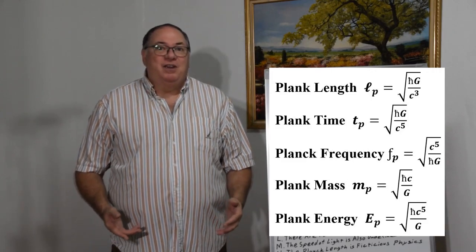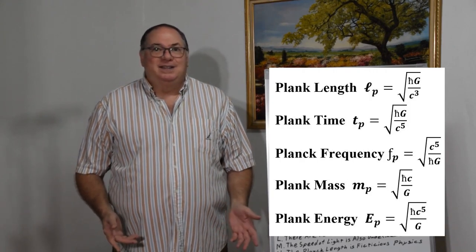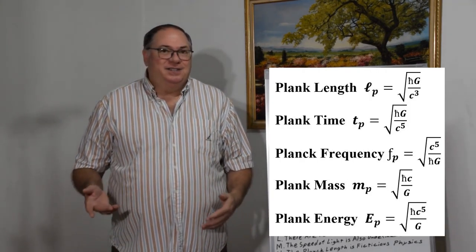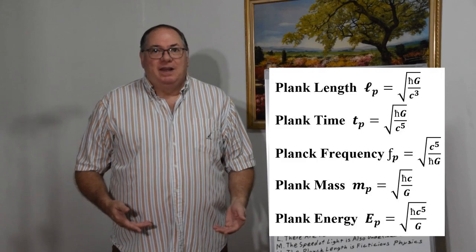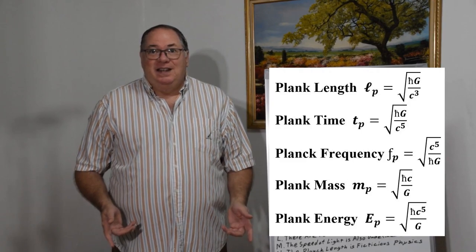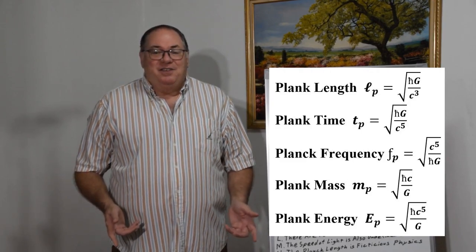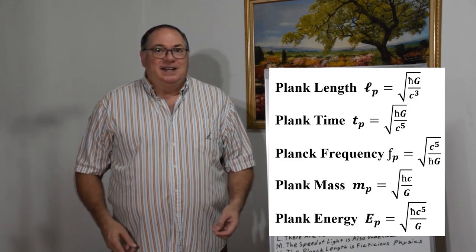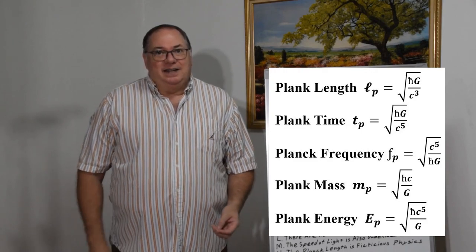If you look at the equation for Planck length, Planck time, Planck frequency, energy and mass, they all have a couple things in common. They have the coefficients G, meaning the gravitational constant, and the speed of light C, plus the constant H.